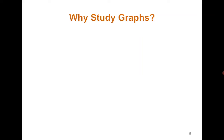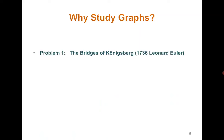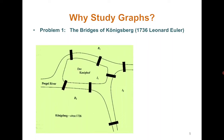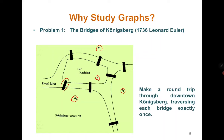We start with the problem of the Bridges of Königsberg. In the figure you can see there were seven bridges and four positions. From these four positions you can go from one to another through the bridges. The problem is that you need to start at any one position and go through all the bridges, visiting each only once.